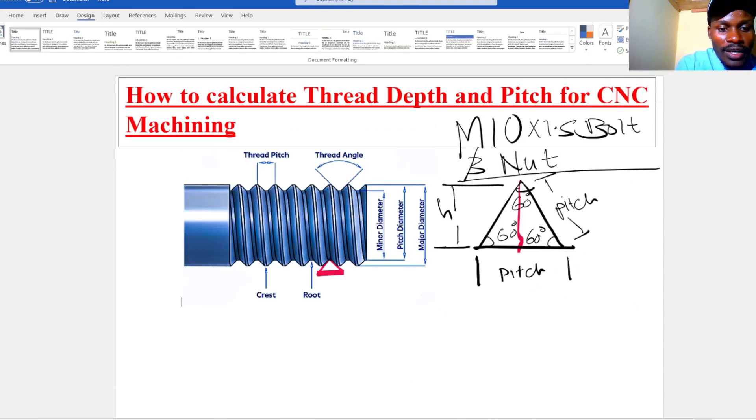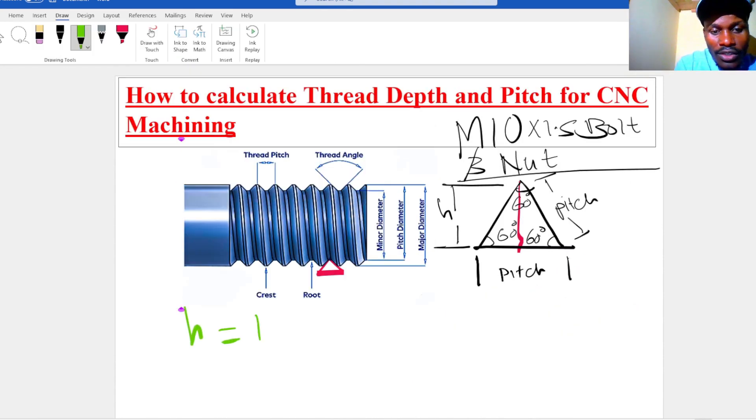Now we have known that our h is 1.299 millimeters. So for an M10 bolt, the diameter of the shaft is 10 millimeters. So when machining, you have to machine the shaft to 10 millimeters in diameter. Then from there, you can go ahead and do the threading.